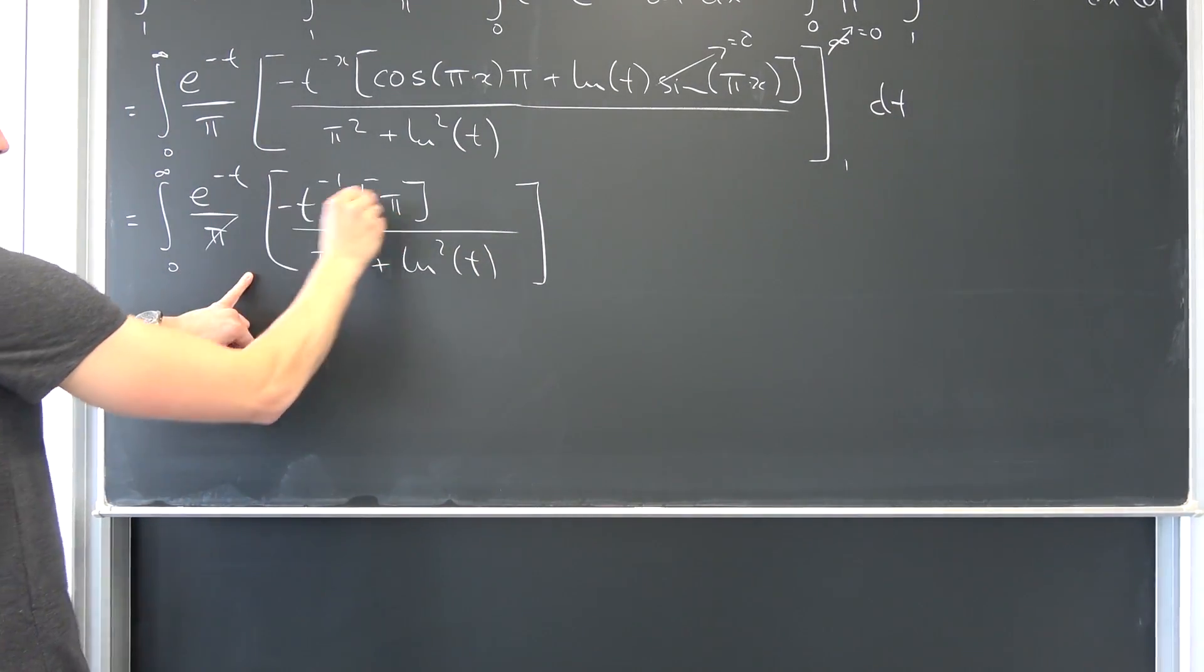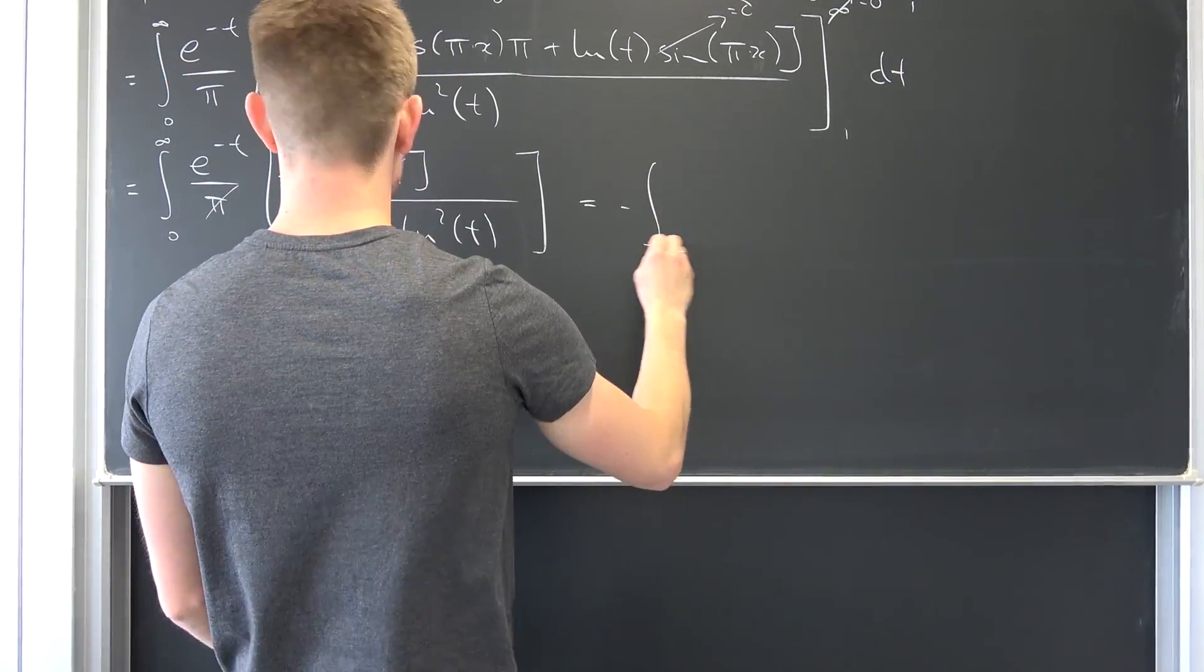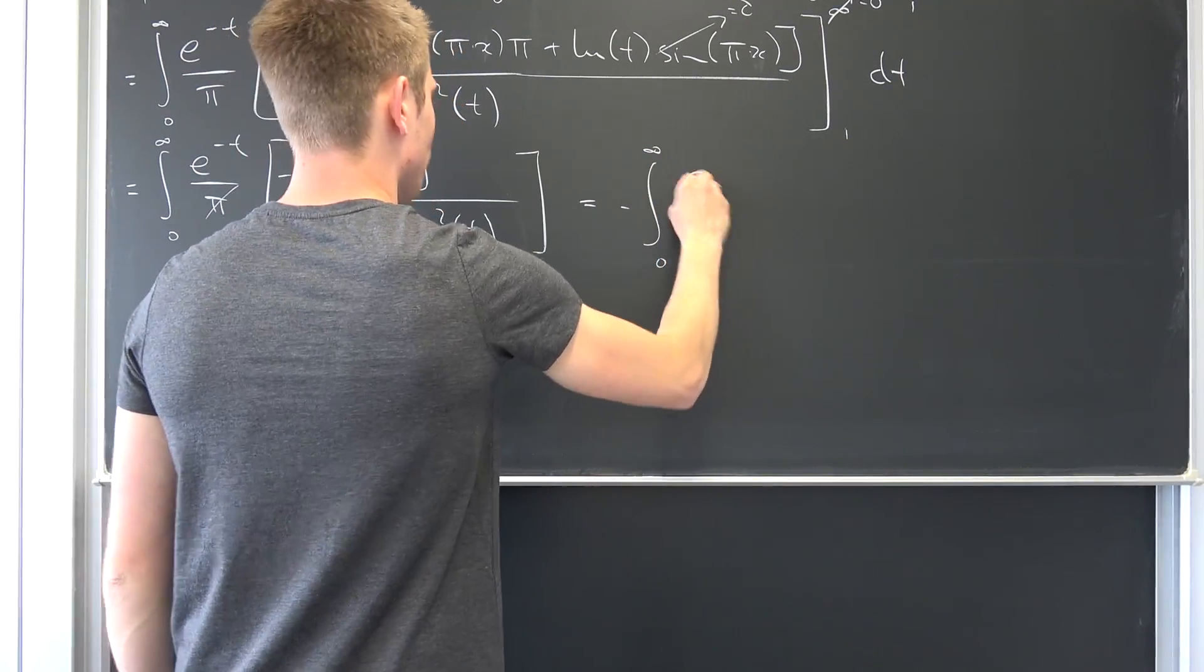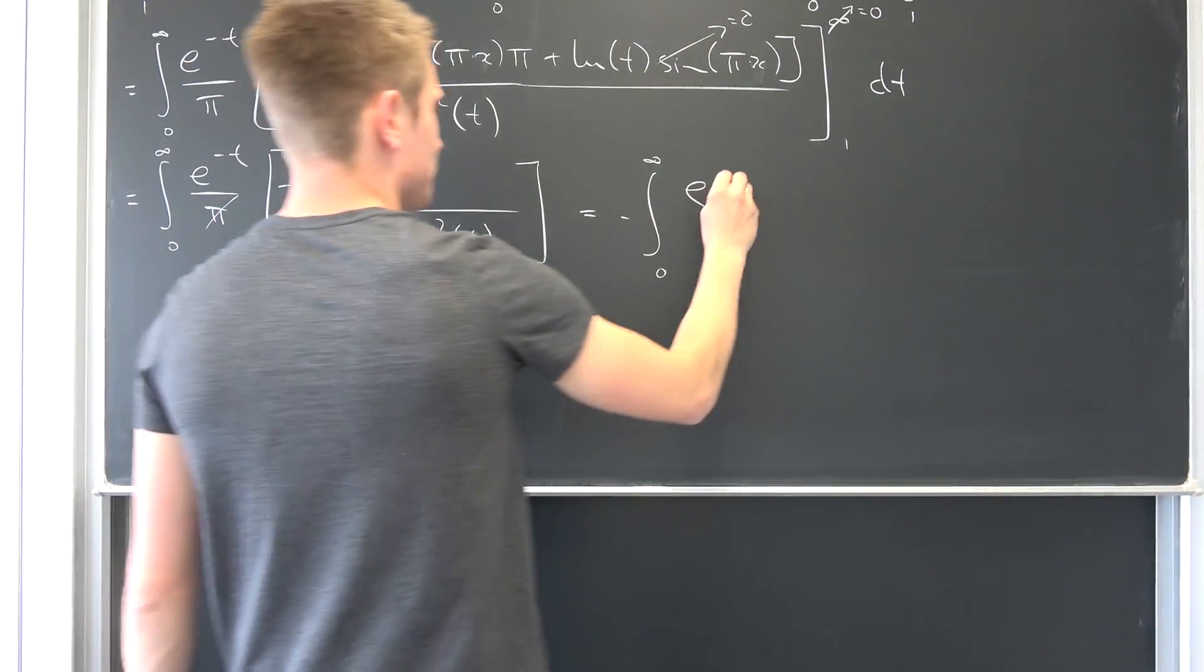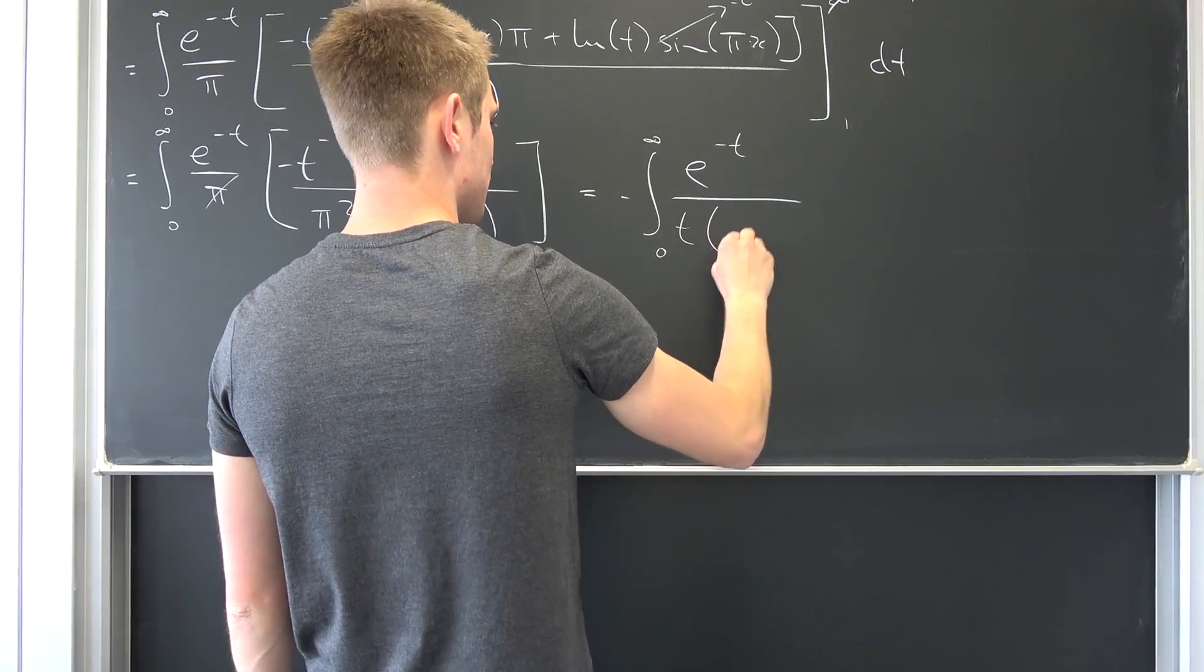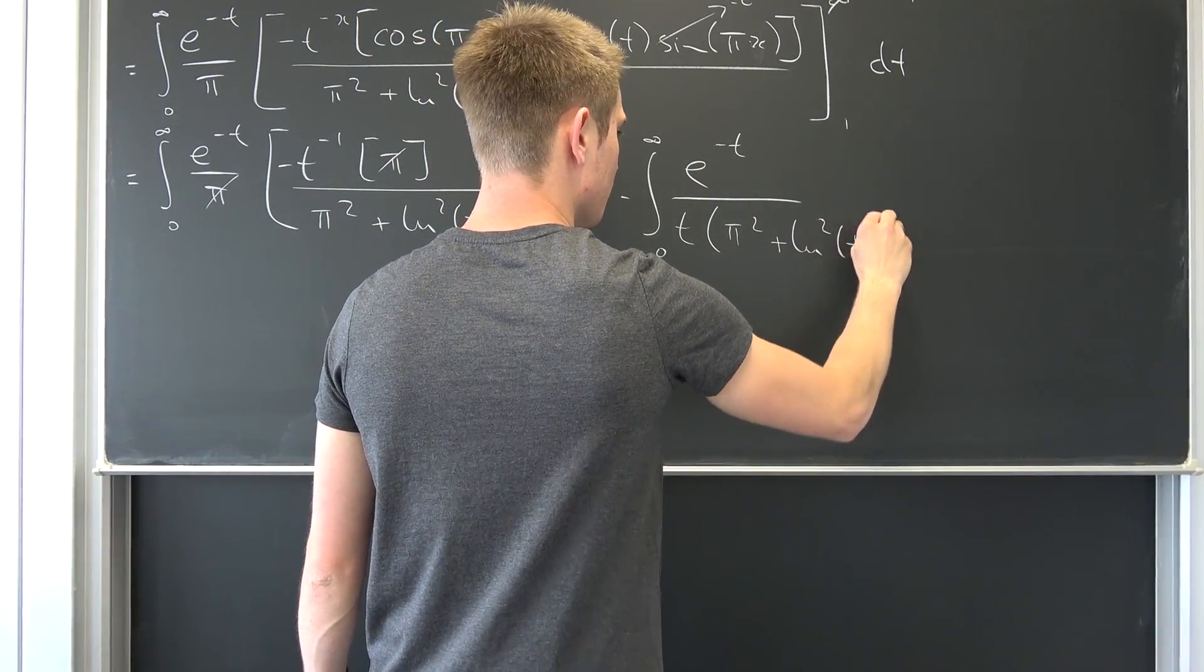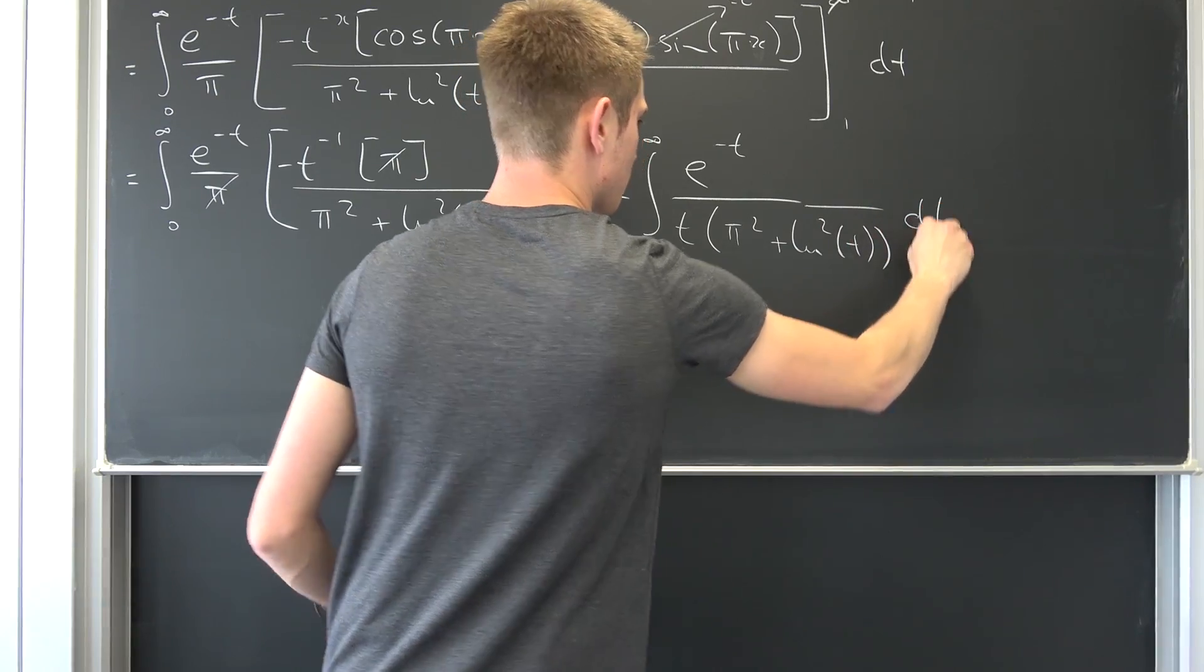Now pi and pi is going to cancel out once again and we are going to get negative integral from zero to infinity of E to the negative T over T times pi squared plus the natural log squared of T, integrated with respect to T.